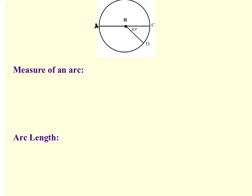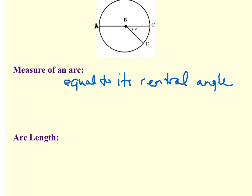This is the last part of the video, and it's the most important. We're going to talk about the difference between the measure of an arc and arc length. We've been introduced to what an arc is — for example, CD is an arc, and CD has two measurements: a measure and a length. The measure of an arc is equal to its central angle. So if I'm talking about arc CD, the measure of arc CD — I have to put a little M in front — is 30 degrees, because CBD is the central angle and we can see that's 30 degrees.